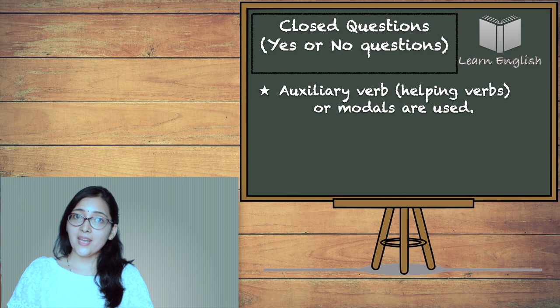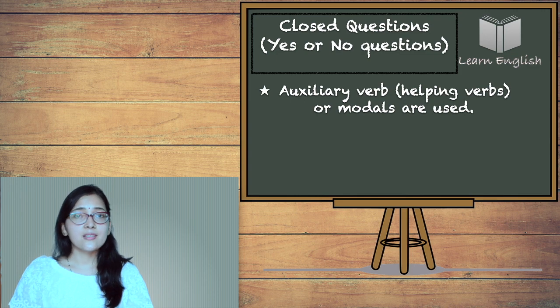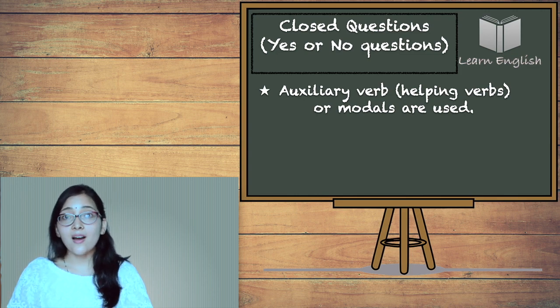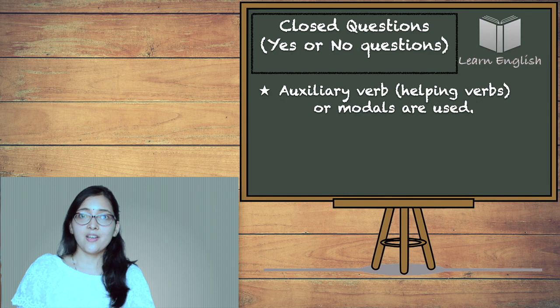These closed questions are made with the help of auxiliary verb or modal verbs. For example, can, could, do, does, did, is, am, are, was, were, etc.